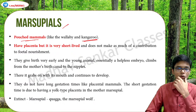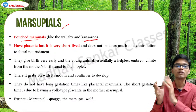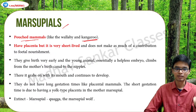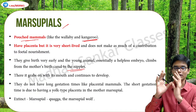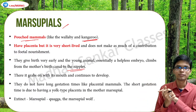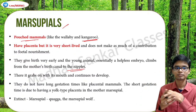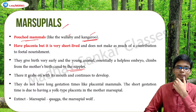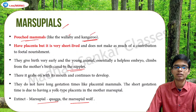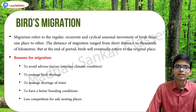Since the placenta does not provide much nourishment to the fetus, marsupials give birth at a very early stage. For human beings the gestation period is like 10 months, but for marsupials it is very very low. The young one climbs from the mother's birth canal to her nipples and continues to develop in the pouch, getting nourishment from the mother. Best examples are kangaroo, wallaby, and there are some extinct marsupials like marsupial quagga and marsupial wolf.